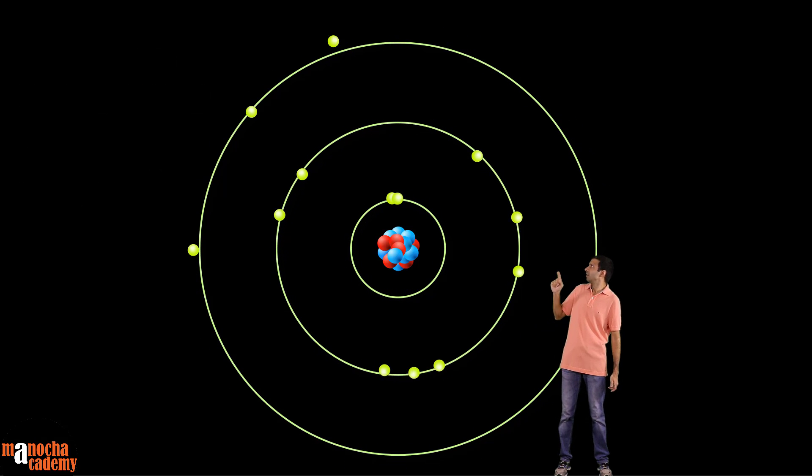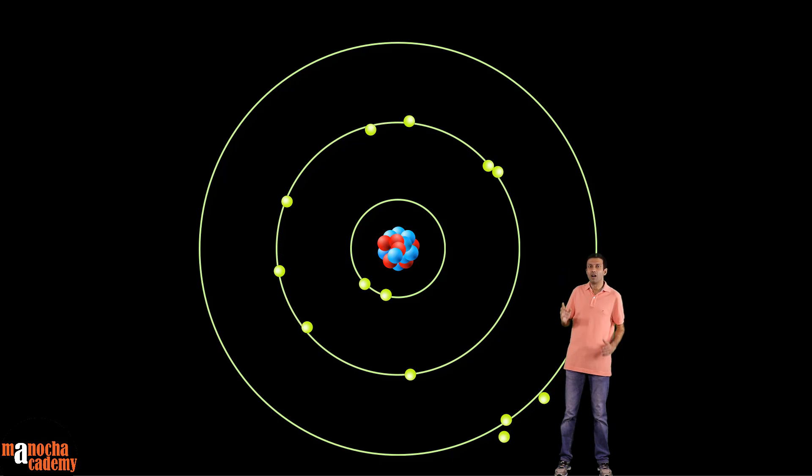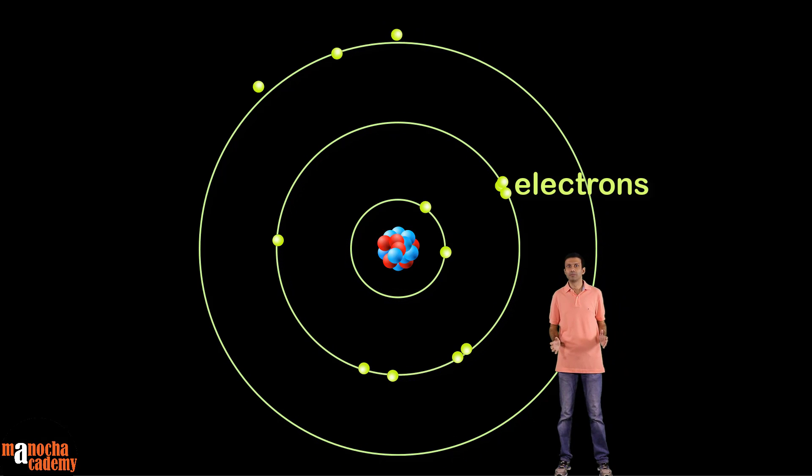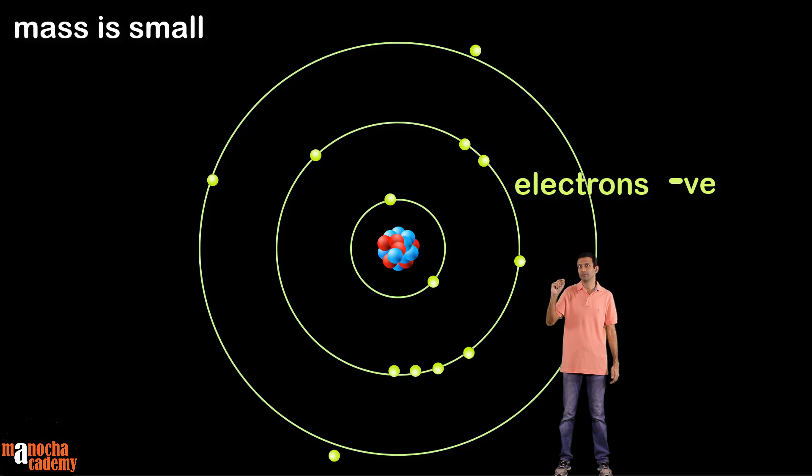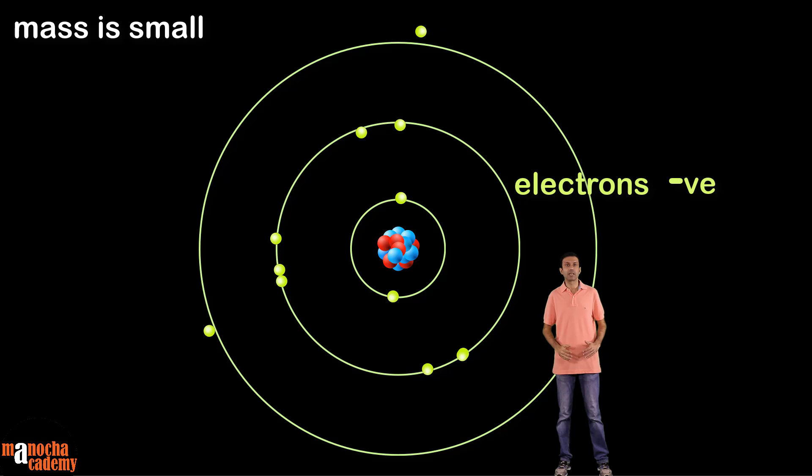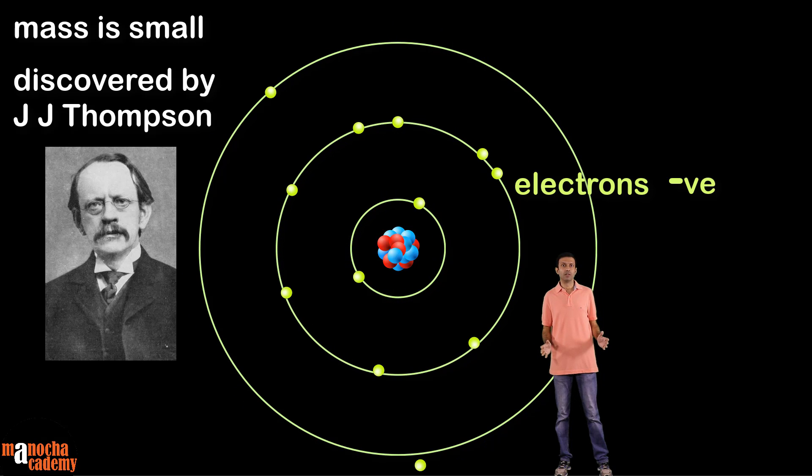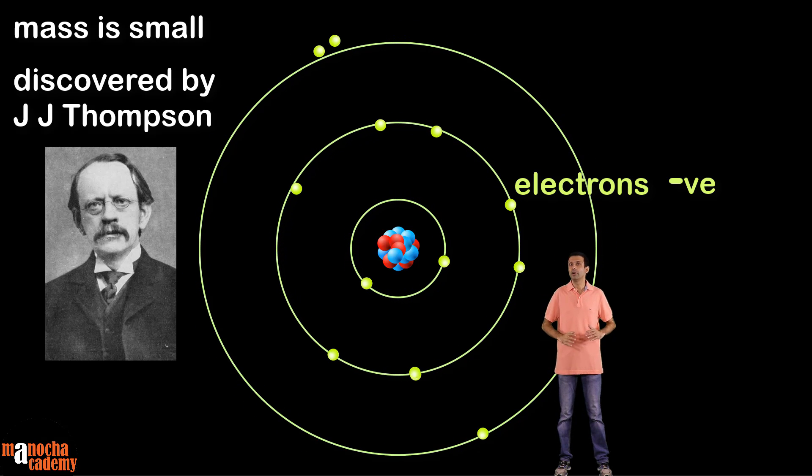The tiny particles spinning around the center are called electrons. These are negatively charged particles and they have a very small mass. The electrons were discovered by J.J. Thomson using the cathode ray tube experiment.